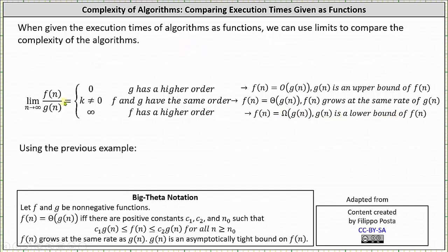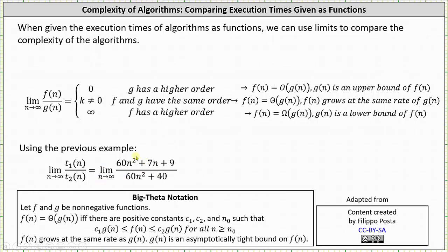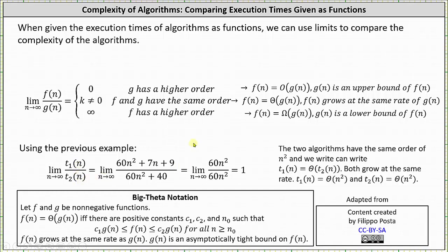Going back to the previous example, let's determine the limit. We have the limit as n approaches infinity of t sub one of n divided by t sub two of n. As n approaches infinity, we're only concerned about the term with the highest degree in the numerator and denominator, which means we can drop the 7n plus 9 in the numerator and drop the plus 40 in the denominator. This gives us the limit as n approaches infinity of 60n squared divided by 60n squared, which equals one. One is not zero and is finite, which indicates t sub one of n and t sub two of n have the same order and therefore have the same time complexity.